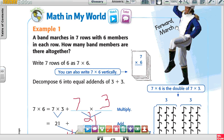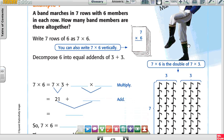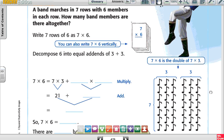Look at the example. It says a marching band in 7 rows with 6 members in each row. How many band members are there altogether?